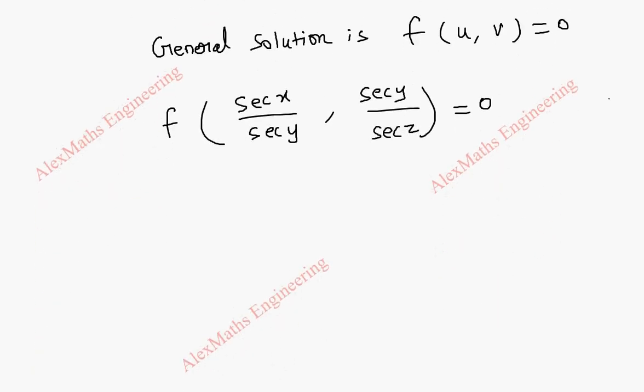Suppose if we change all sec x, when this comes down it becomes cos x in the denominator. If this goes up, we get cos y in the numerator. So this is f of cos y by cos x and cos z by cos y.